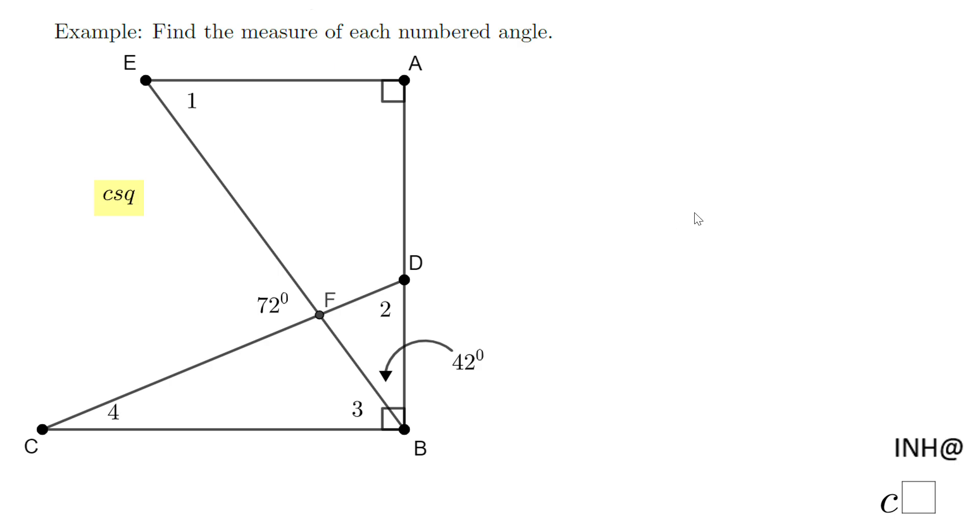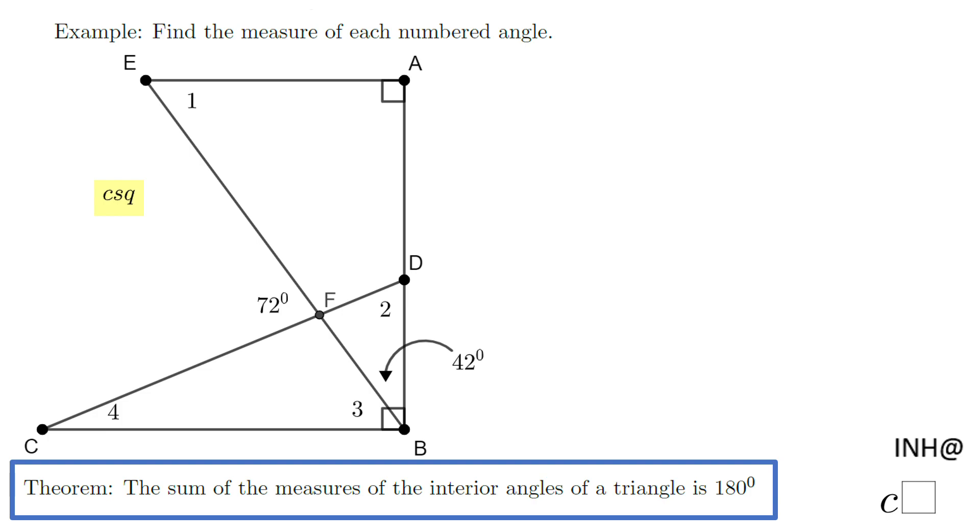Welcome or welcome back at I Need Help at C Square. In this example we need to find the measure of each numbered angle. We notice we have four of them: angle 1, angle 2, angle 3, and angle 4. For that reason, I'm going to use this theorem you see down here, which says the sum of the measure of the interior angles of a triangle is 180°. Let's start with angle 1.